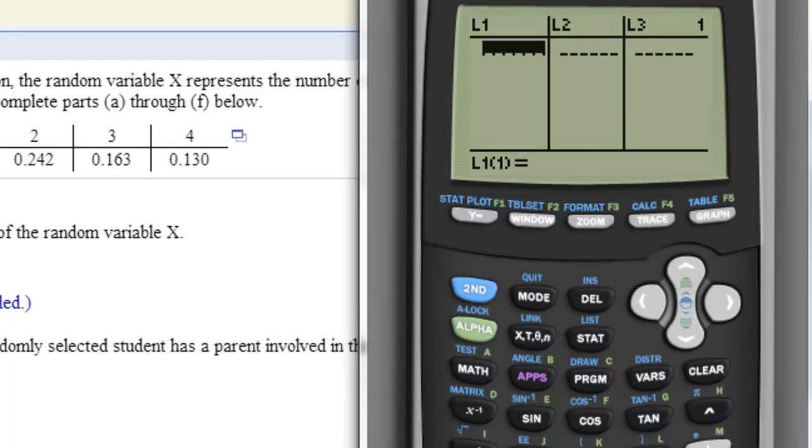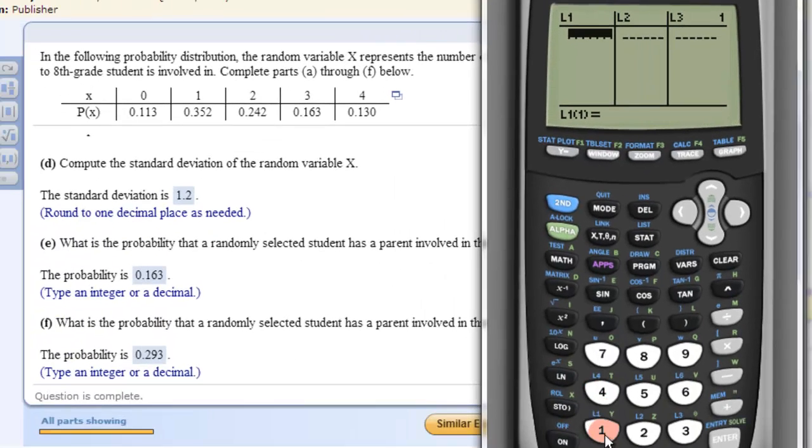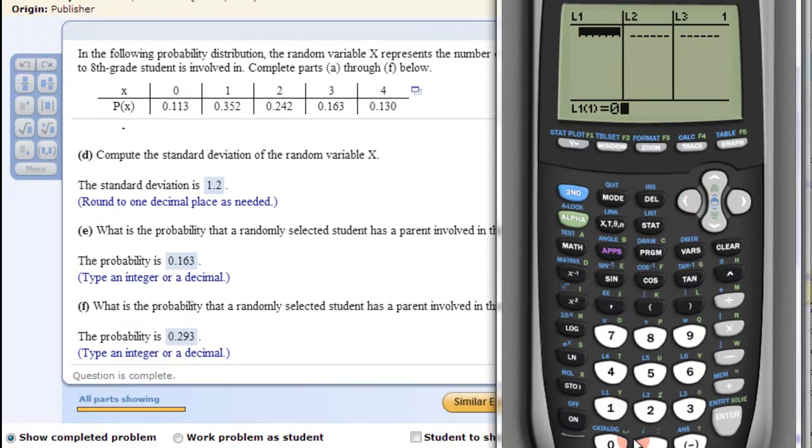So I hit enter, and then we put in the x values: 0, 1, 2, 3, and 4. Then I click over to the right and enter the probabilities, 0.113 and 0.130.